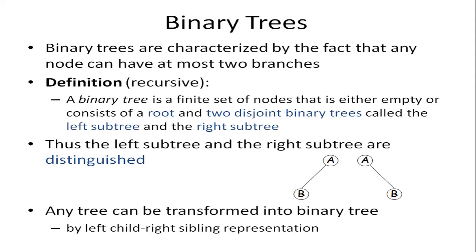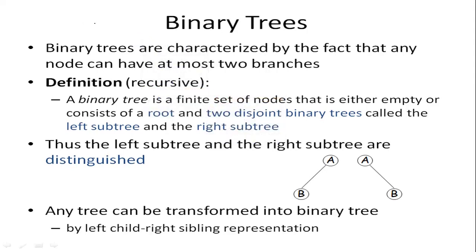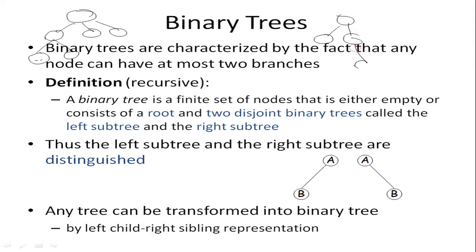Binary trees are categorized by the fact that any node can have at most two branches. That means a binary tree is a tree in which any node can have at most two children. A node can have one child or maximum two children — it cannot have a third child. If it does, it will not be a binary tree.